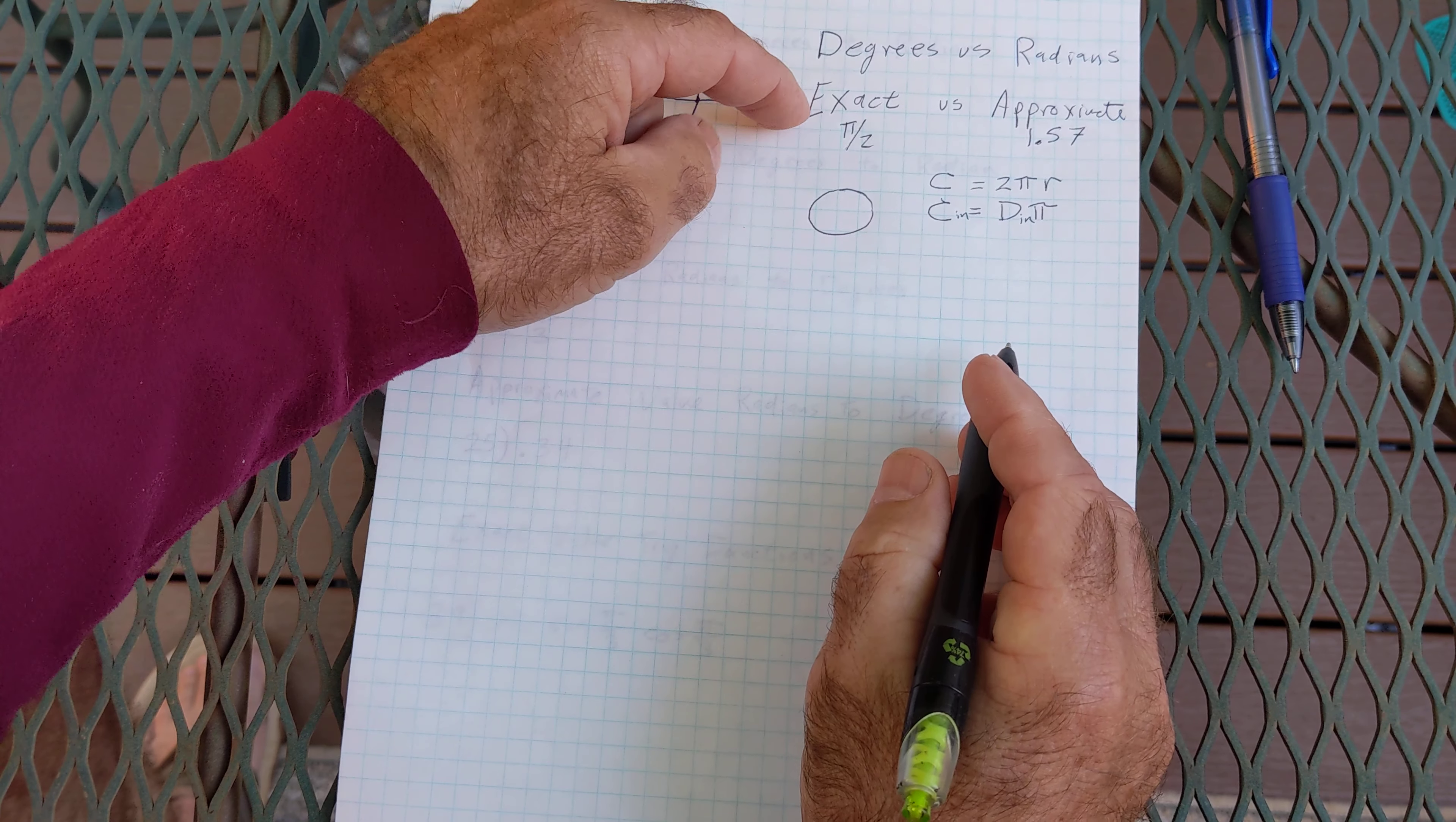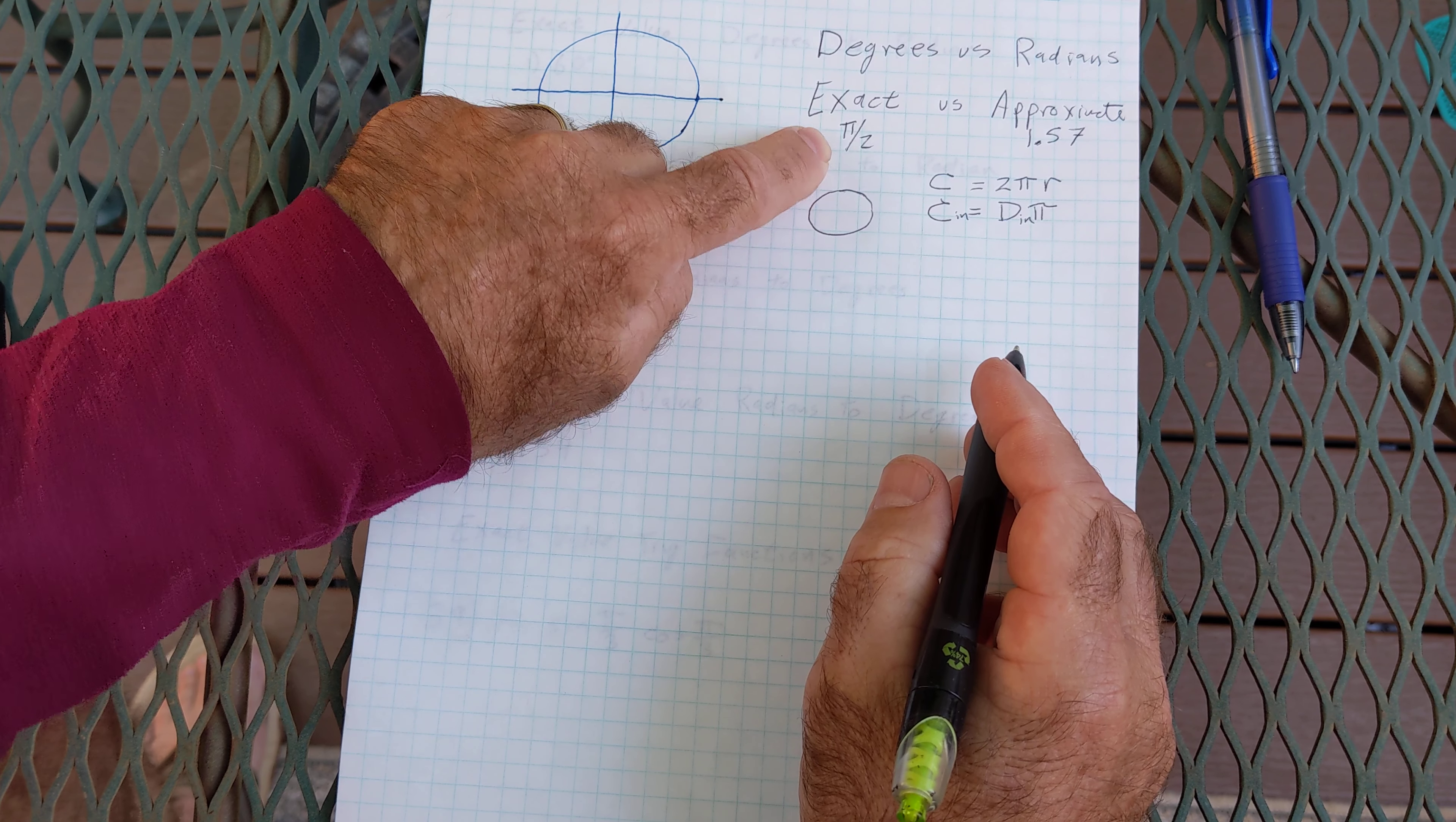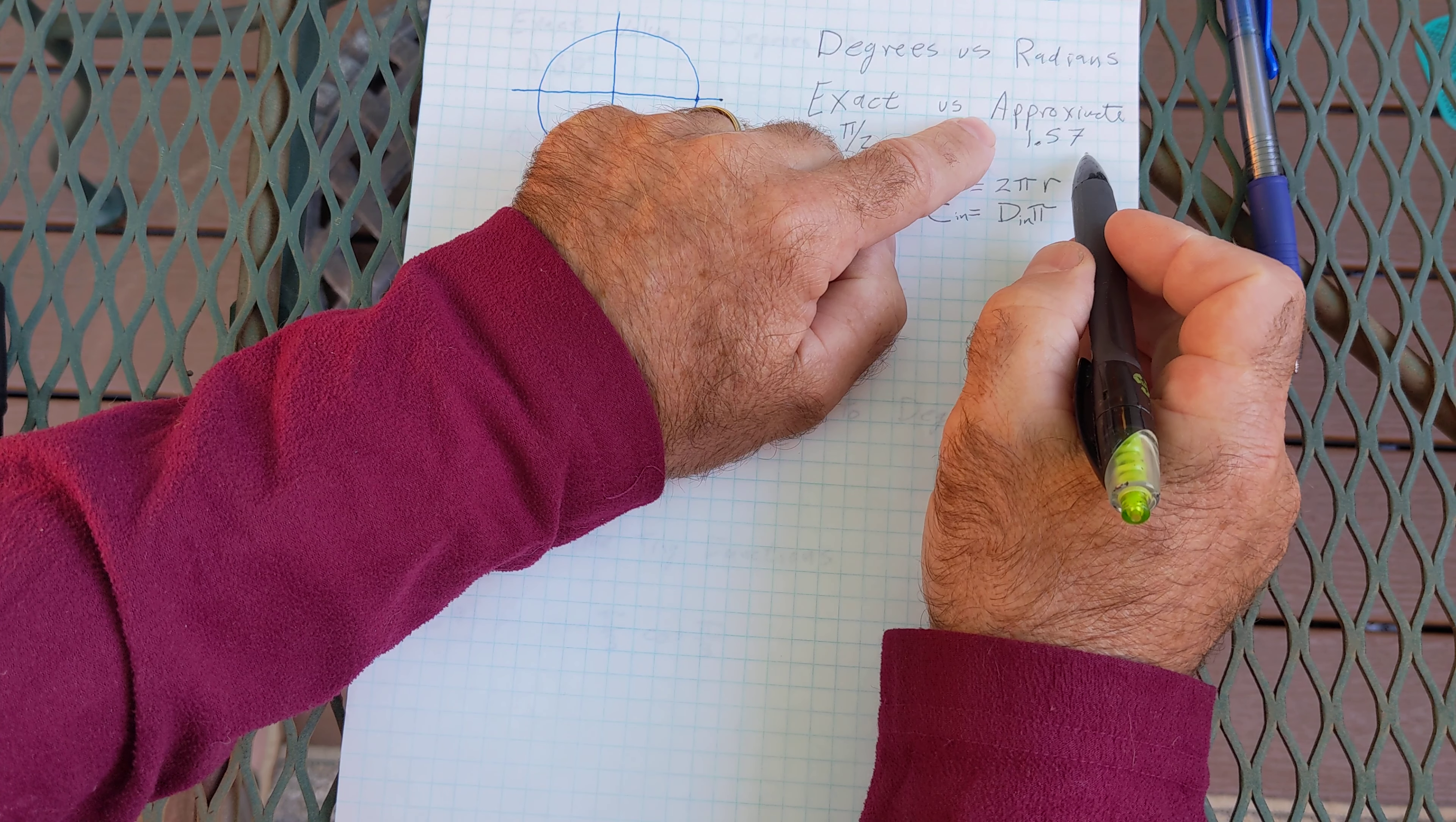So if the problem says exact value you are not using a calculator, your answer will be in fractional form like this or in terms of the greek letter pi. Approximate value you're using your calculator to get a decimal approximation.